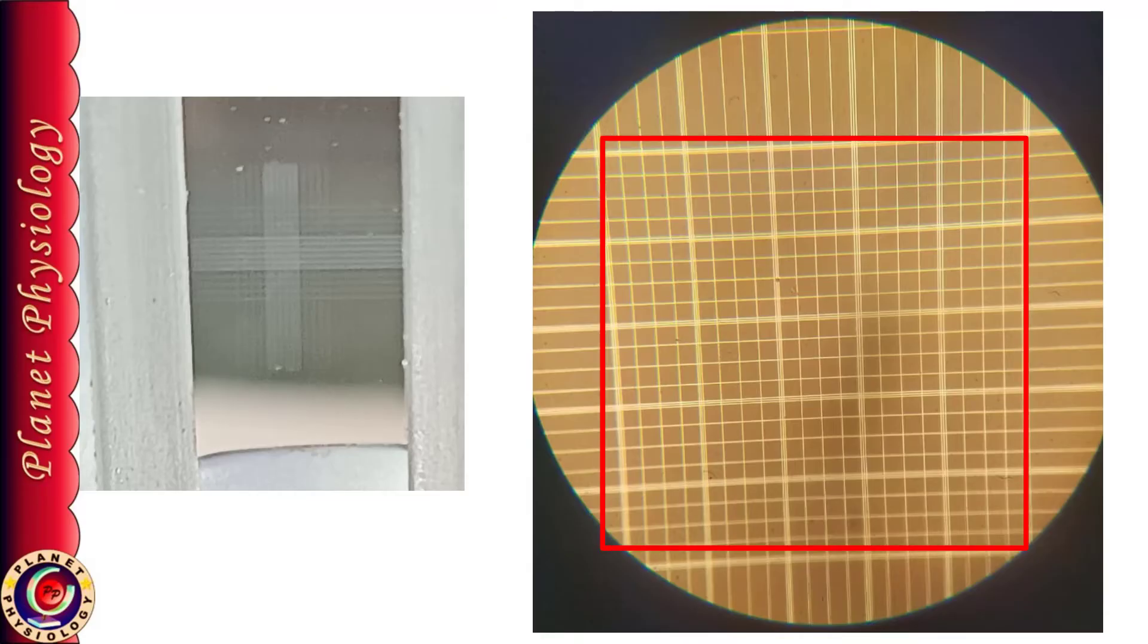Now this part of the square you should focus under high power. Make sure that RBC square should be visible under low power then only switch to the high power. If you are in WBC square under high power, you may not see anything.